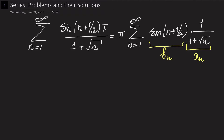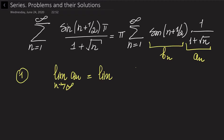As the Dirichlet test tells us, we just need to check the limit of aN first. So I am going to find the limit of aN when n goes to infinity. It is equal to the limit of 1 divided by (1 + √n), which when n goes to infinity is simply equal to 0. So the first condition of the Dirichlet test is fulfilled.